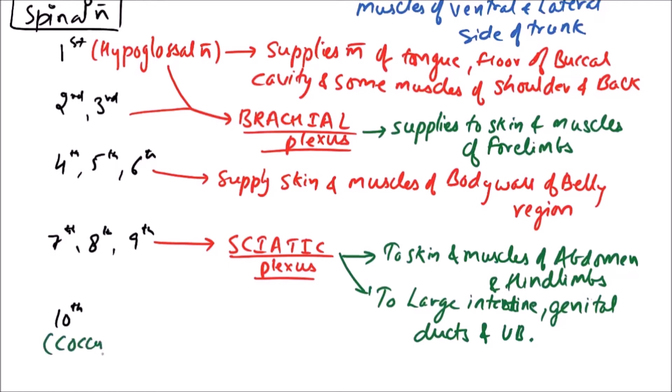While the 10th one, if present, it is also known as coccygeal nerve. And it usually, if present, joins the sciatic plexus. It also gives the branches to urinary bladder and cloaca, supplies urinary bladder and cloaca.